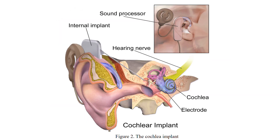The cochlear implant is a surgically implanted electronic device to help patients overcome defects in hearing. The internal implant contains an array of electrodes which is placed into the cochlea and stimulates the cochlear nerve. So in this situation, fast and accurate detection of cochlear position is very important.